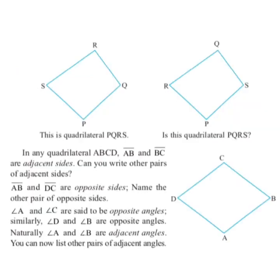Now take out page number 82. You can see two figures are given. This is quadrilateral PQRS. In the second figure, you have to say whether this quadrilateral is PQRS or not.